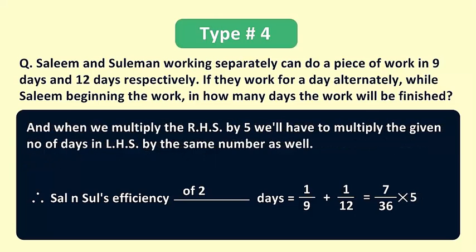And when we multiply the RHS or the right hand side by 5, we'll have to multiply the given number of days in LHS by the same number just to balance the equation.